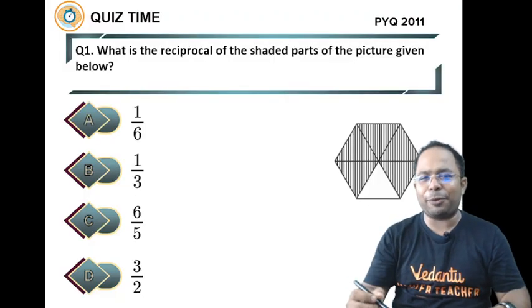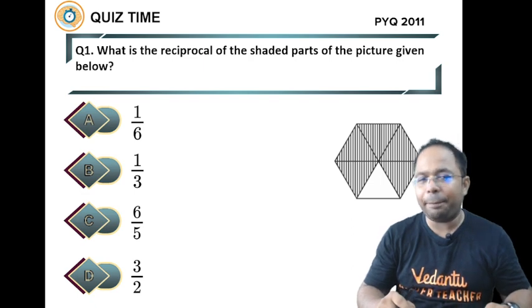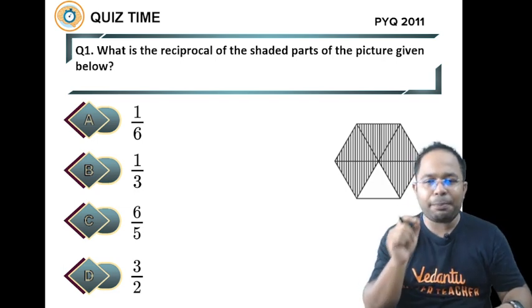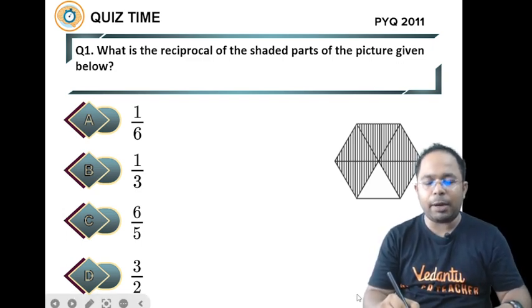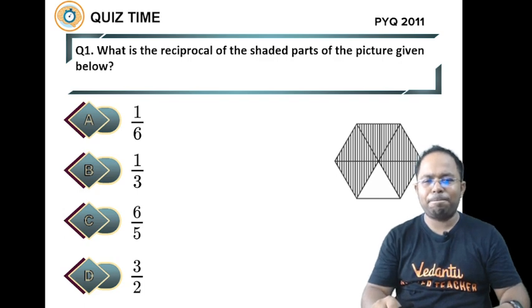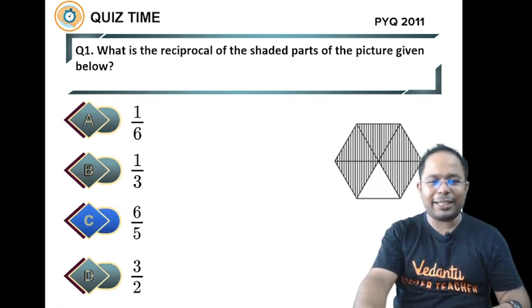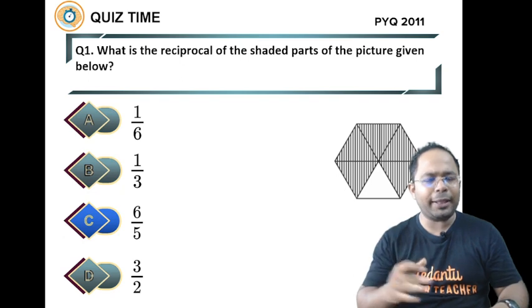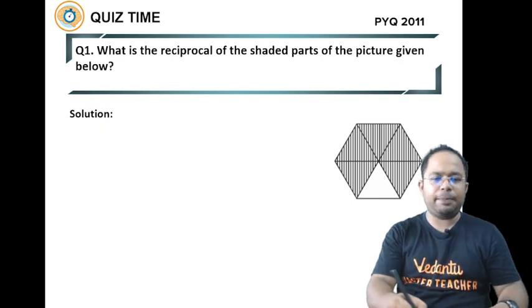What is the reciprocal of the shaded parts of the picture given below? This is a previous year question 2011. Your options are 1 by 6, 1 by 3, 6 by 5, or 3 by 2. Please pause the video, solve it and write on the chat box.